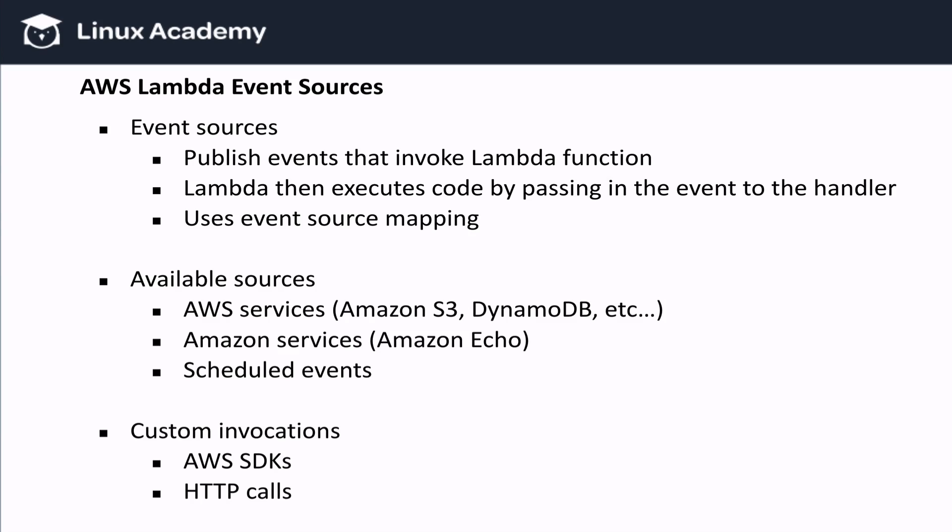What do I mean by event sources? Well, we have access to a few different ones. There are AWS services like Amazon S3, DynamoDB, and SNS. There are also Amazon services like Amazon Echo, which provides really interesting use cases. We can also have scheduled events. In addition to using event sources, we can actually directly invoke functions using AWS SDKs and HTTP calls through the Amazon API Gateway, for example. This can be very useful for certain situations like mobile applications.